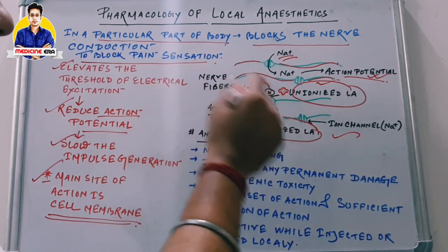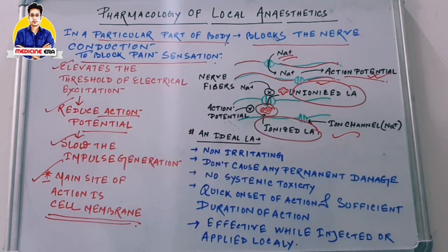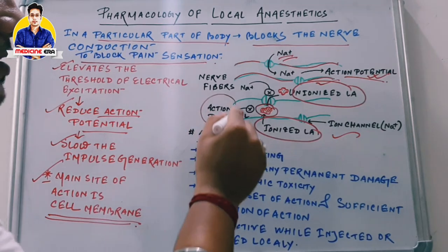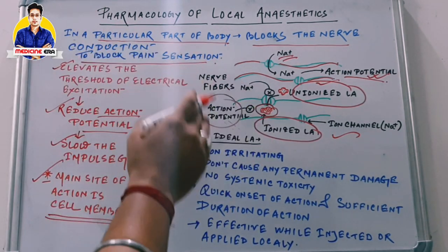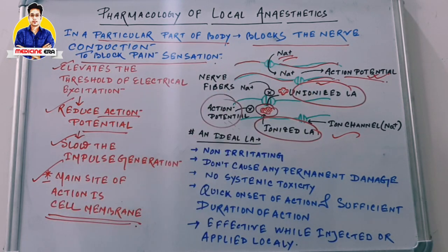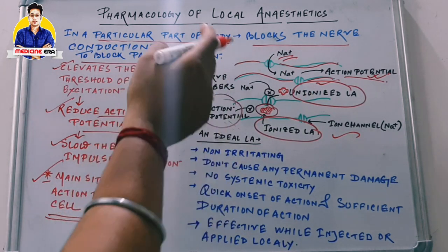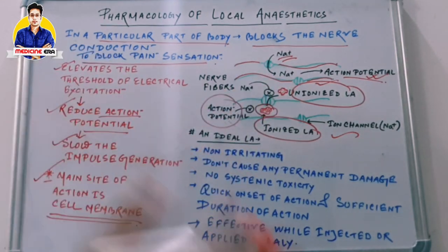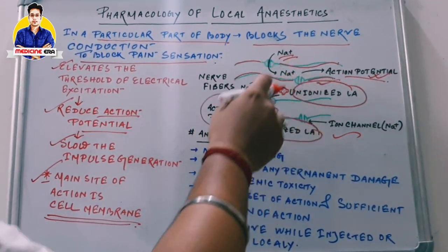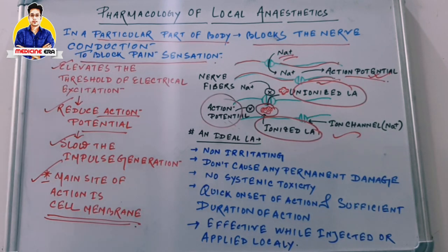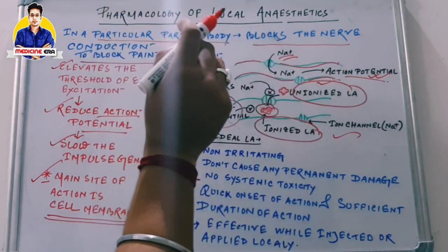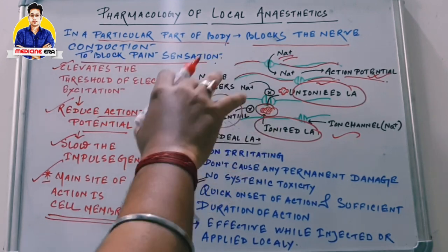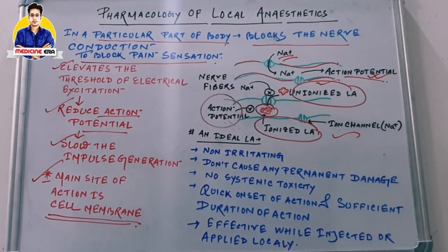Due to the lack of sodium ion influx into the nerve fiber, the action potential is blocked. With inhibition of action potential, there is no nerve impulse conduction. That blocks nerve impulse generation in the particular area under surgery, resulting in no pain sensation. This is the micro-level mechanism of local anesthetics.